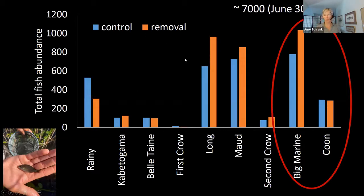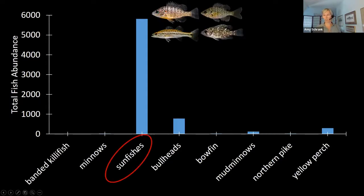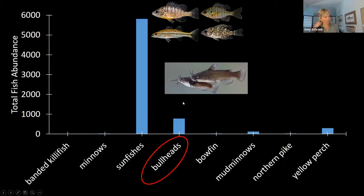By far the most dominant group in these cattail stands were sunfish — pumpkinseeds, green sunfish, bluegill, occasional largemouth bass, and rock bass — nearly 6,000 of those. The next most abundant were bullheads: black bullhead, brown bullhead, and tadpole madtoms, close to a thousand. Third most abundant were yellow perch, driven largely by Lake Kabetogama, around 300. The fourth most abundant were mud minnows — not actually a minnow but more closely related to northern pike — which can gulp a little oxygen from the air in really low oxygen situations.